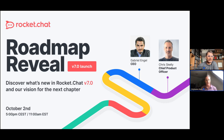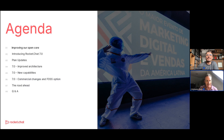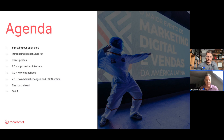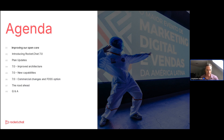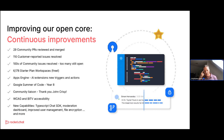Today we're concentrating largely on our 7.0 launch. Our agenda covers a look back at the past year's progress on improving our open core, an introduction to version 7, a key plan update, improved architecture, new capabilities, commercial changes, and a FOSS option we're introducing. We'll close with the road ahead and address questions as we go.